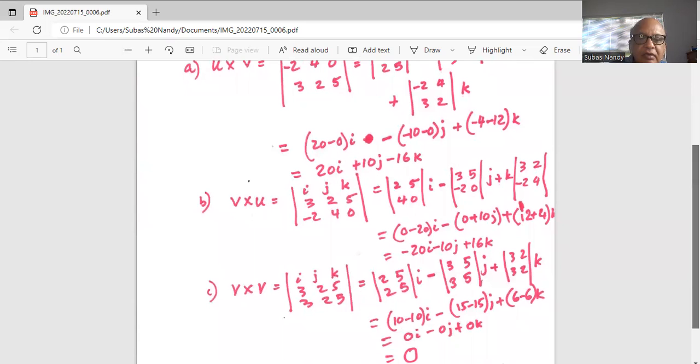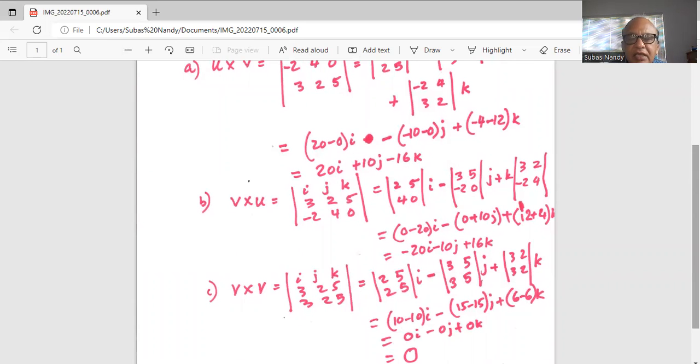Now, v cross v, so i, j, k in the first row, then 3, 2, 5 coefficients of v, and again, coefficient of v in the third row, and then eliminate the first row, first column, you are left with 2, 5, 2, 5 for i, then eliminate the first row and the second column, 3, 3, and 5, 5, and for k, eliminate the first row and the third column left with 3, 2, 3, 2.